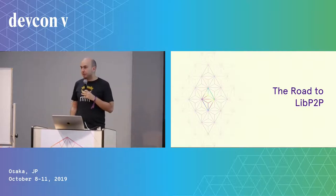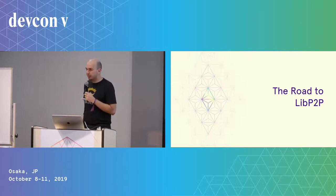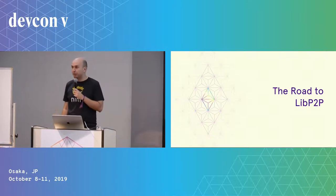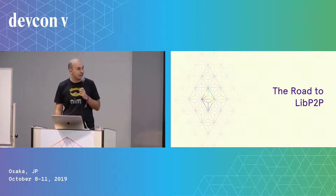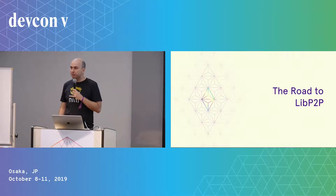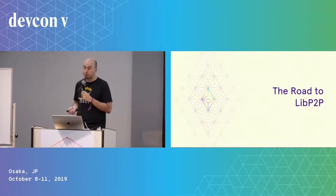The first and major difference between Ethereum 1 and Ethereum 2 is that we are transitioning to libp2p, which is a protocol developed by Protocol Labs for the purposes of developing IPFS. It's matured out of this project. I figured I should start with a few words on why this transition was made and why we decided to move to libp2p.